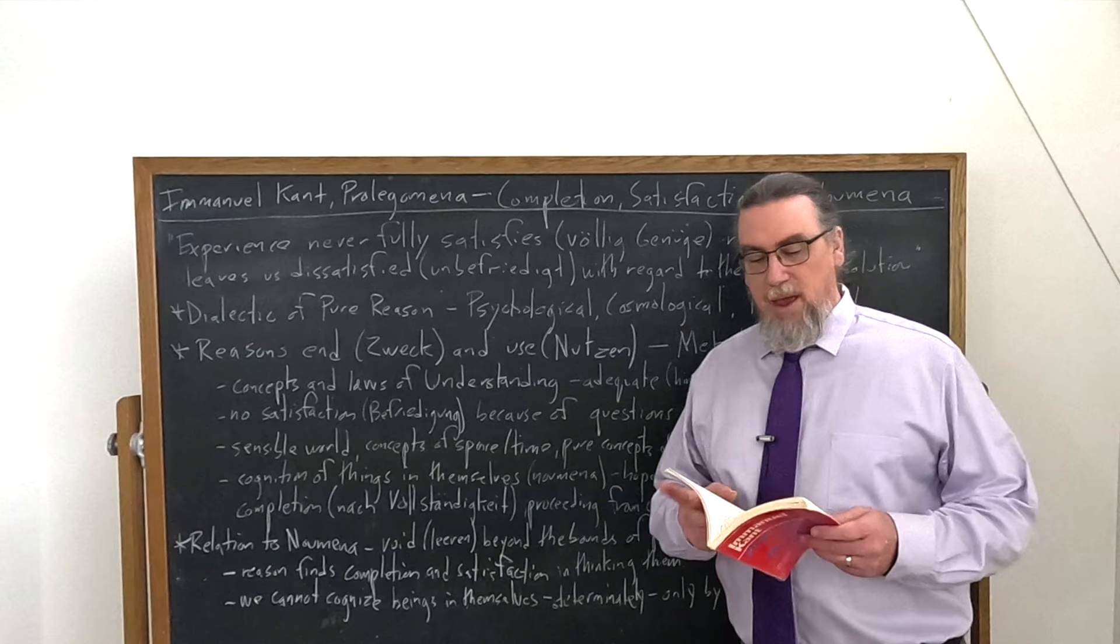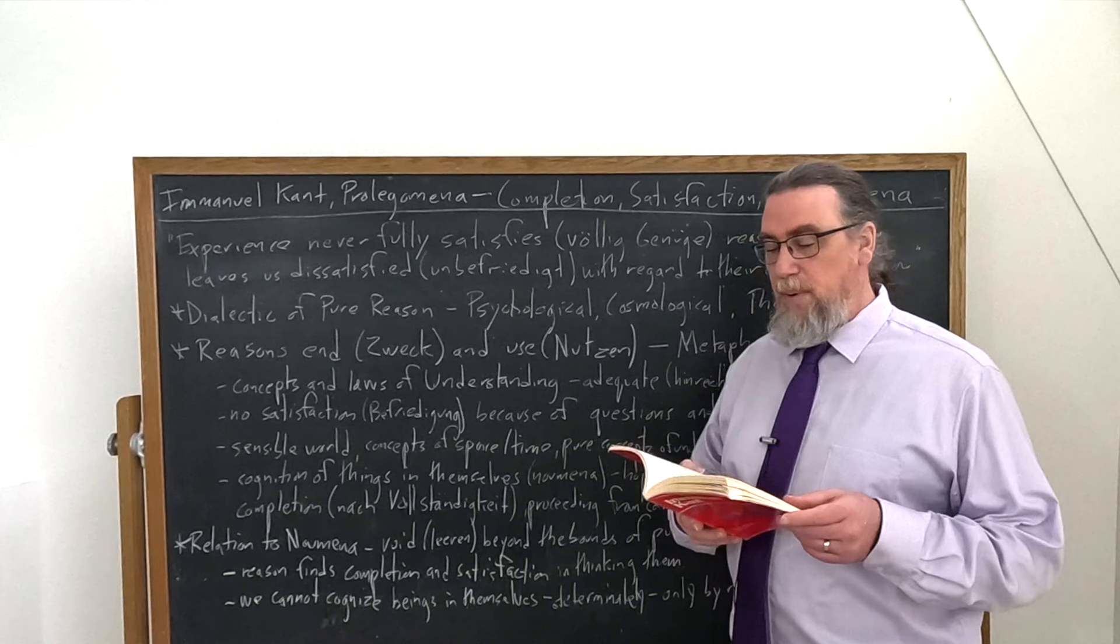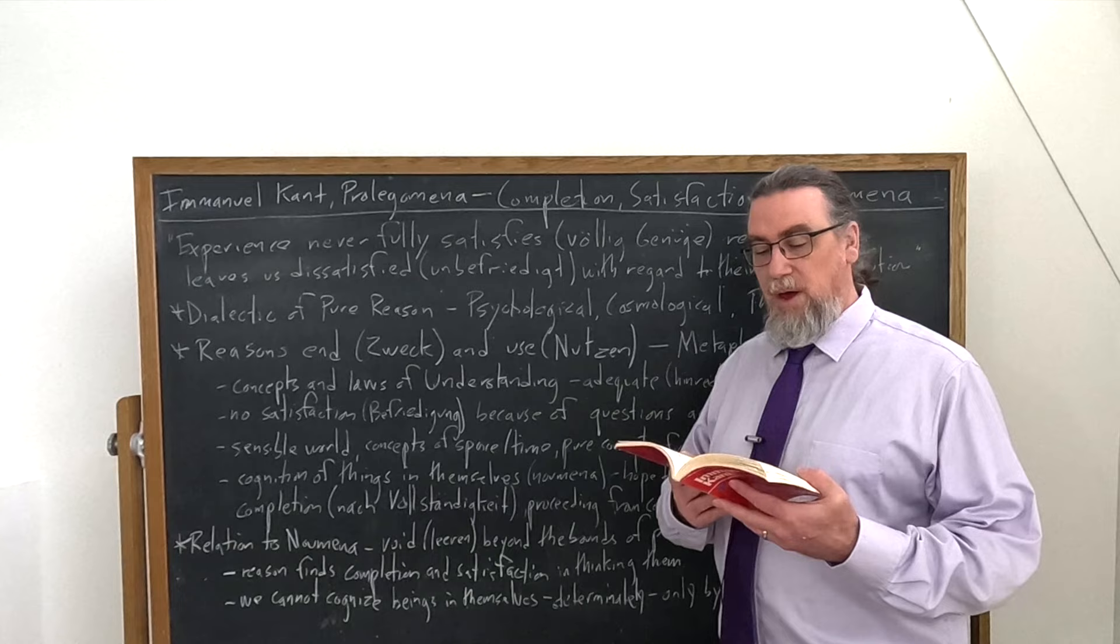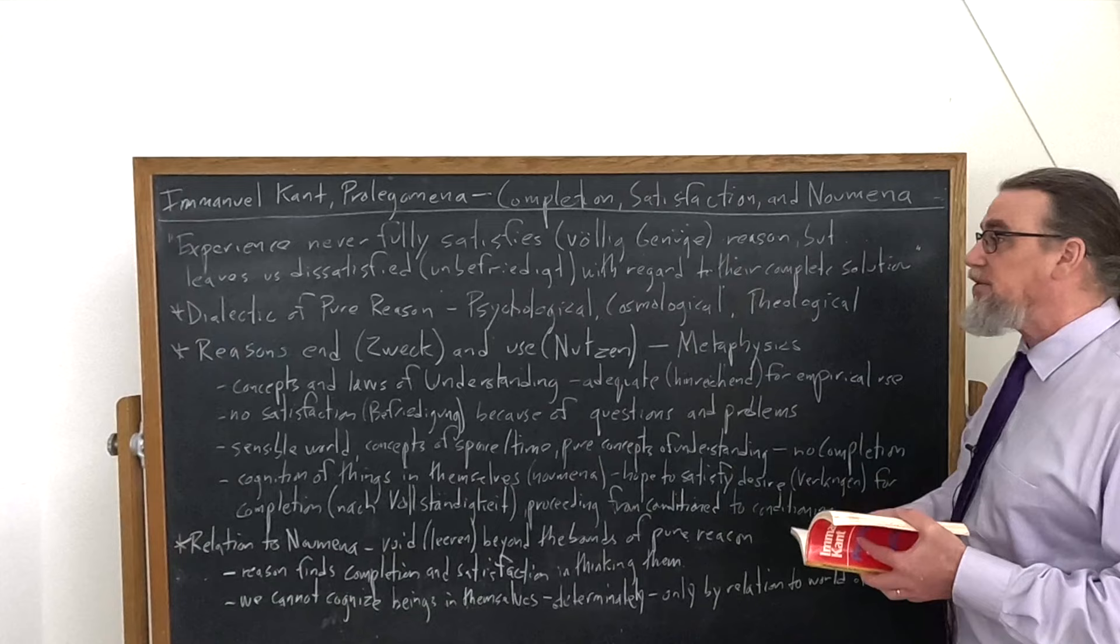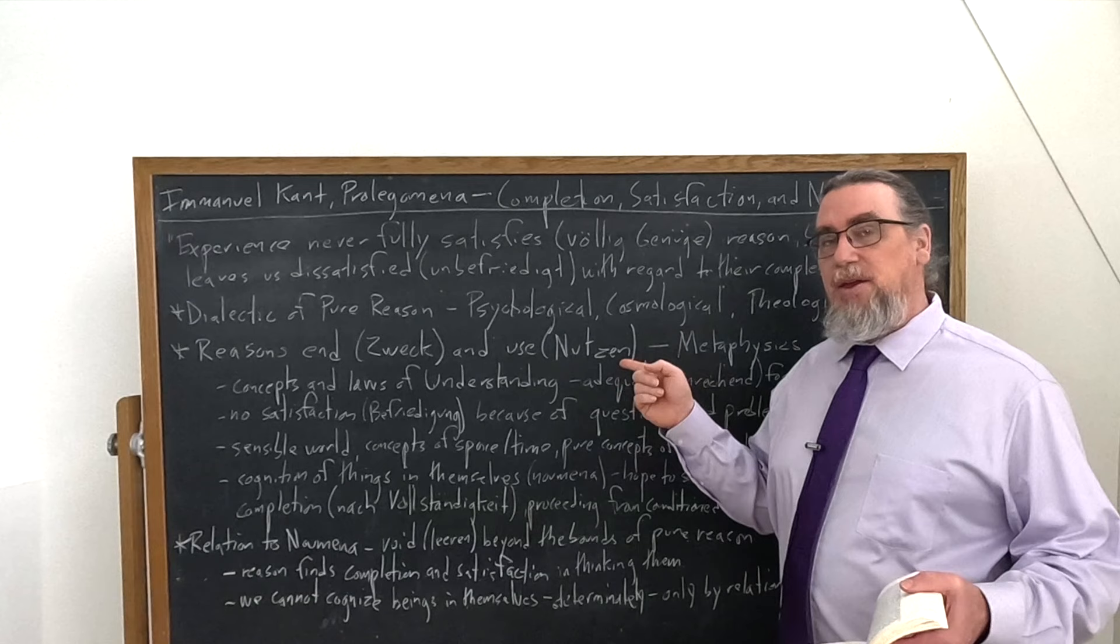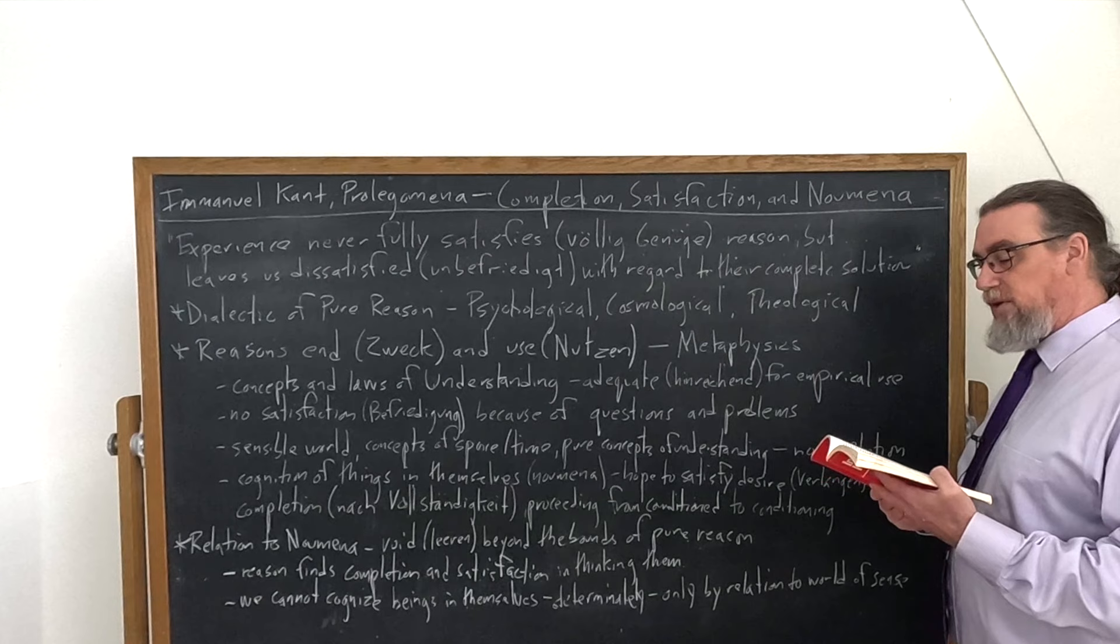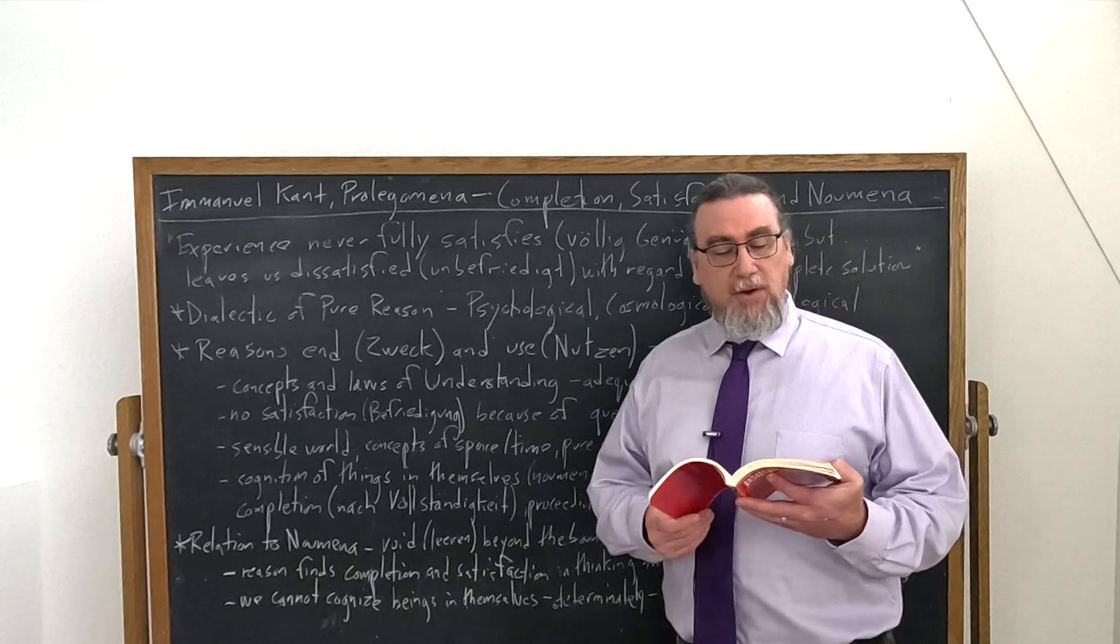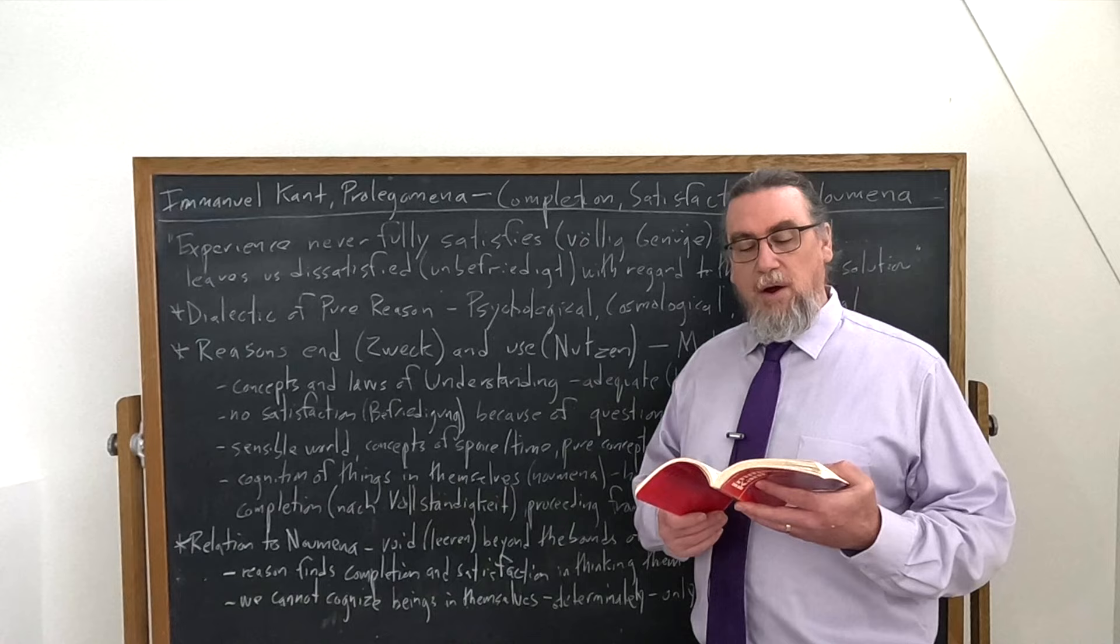And interestingly, Kant is going to talk just a little bit earlier about the end and use of our reason. Reason's end and use is what leads us into metaphysics. So there's a purpose, a goal to reason. It's one that reason itself can uncover for itself. And reason can regulate its own use, its own nutzen. So how is this actually going to work? And why is it that metaphysics is going to lead us into this? He says, metaphysics and its fundamental features, perhaps more than any other science, is placed in us by nature itself and cannot be considered the production of an arbitrary choice or casual enlargement in the progress of experience, from which it is quite separate, disparate.